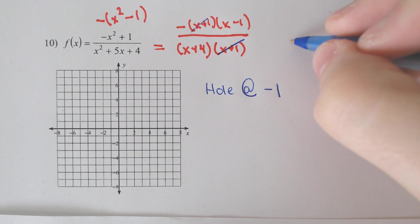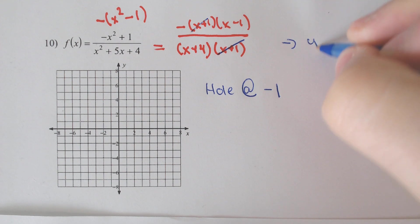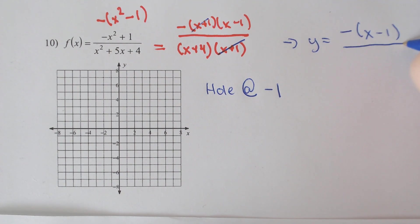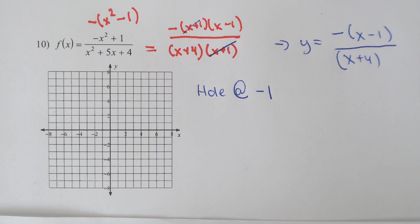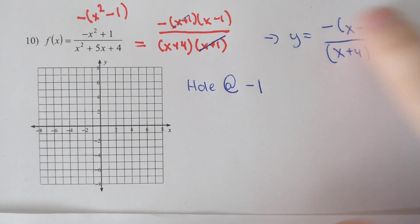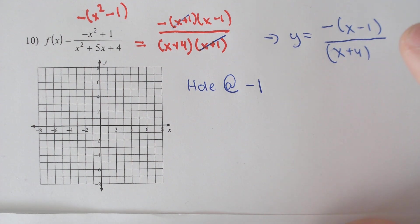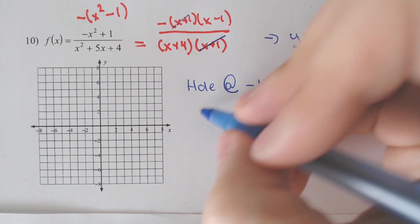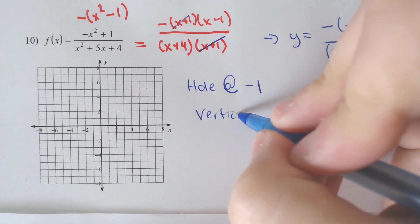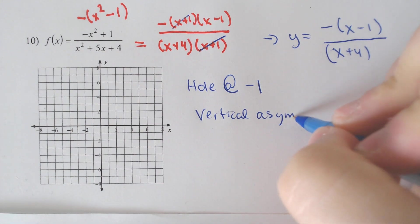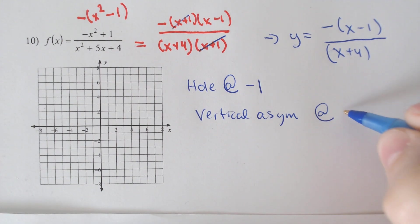But we still have to graph what's remaining, which is in this case negative x minus 1 over x plus 4. So all the same rules from the graphing part remain for this. On this remaining part we have a vertical asymptote at x equals negative 4, because the vertical asymptotes you set the bottom equal to 0.